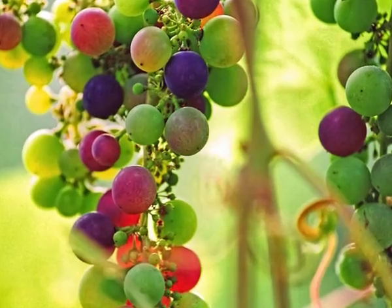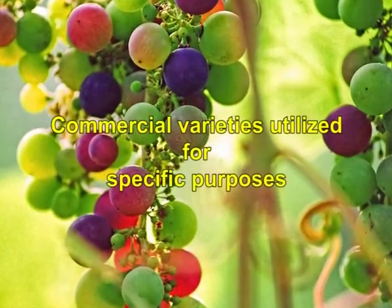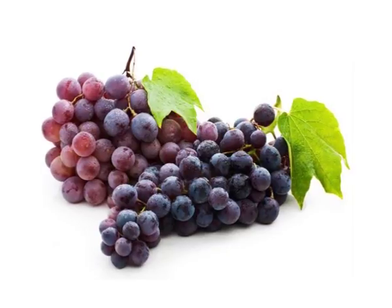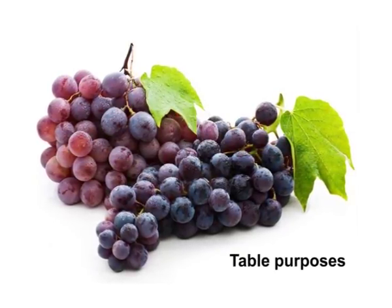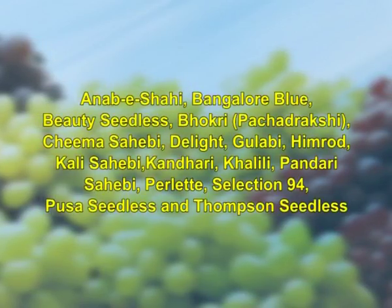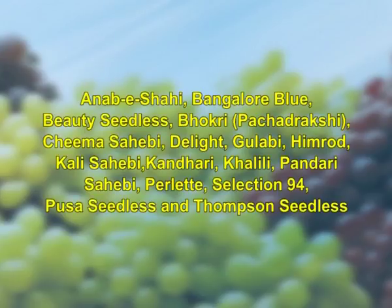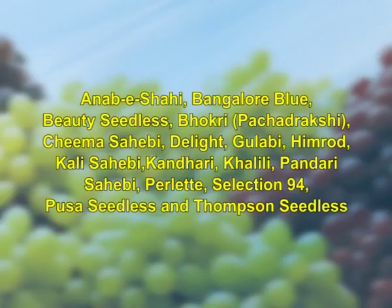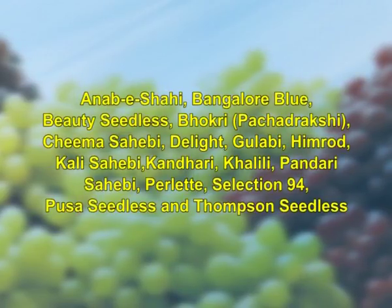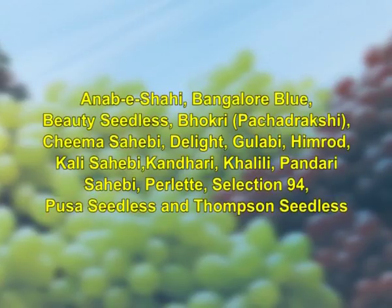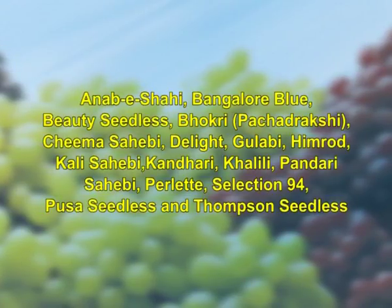The second classification is commercial varieties utilized for specific purposes. Varieties suitable for table or dessert purposes include Anab-i-Shahi, Bangalore Blue, Beauty Seedless, Bokri (Pachatracha), Kali Sahib, Delight, Gulabi, Himrod, Bandari Sahib, Perlet, Selection 94, Pusa Seedless, and Thompson Seedless.